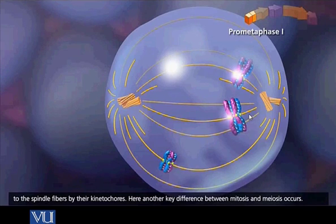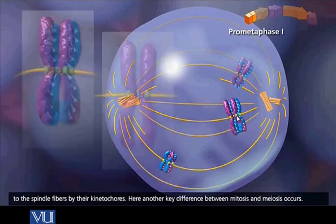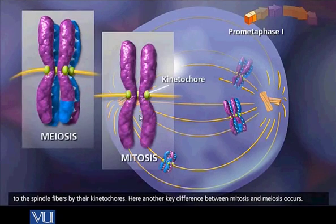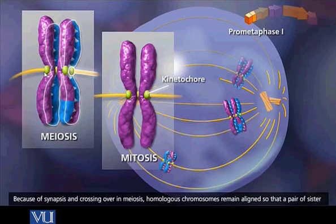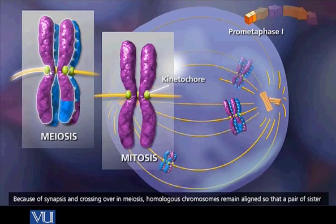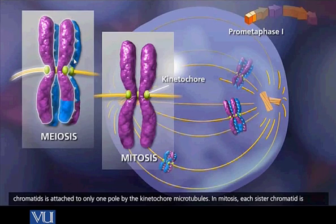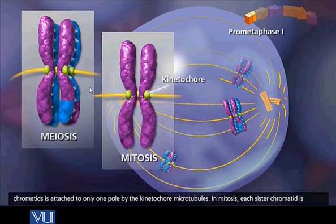Here we will have the kinetochore microtubules attached to the kinetochores of homologous chromosomes. In meiosis, the kinetochore microtubules are attached to kinetochores of adjacent homologous chromosomes. When they contract, they will pull the homologous chromosomes apart.